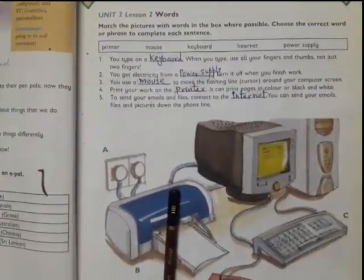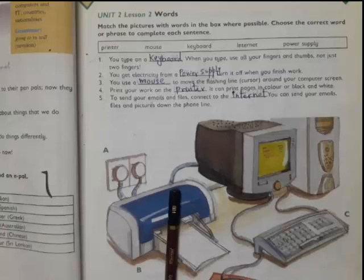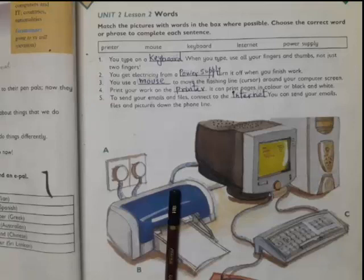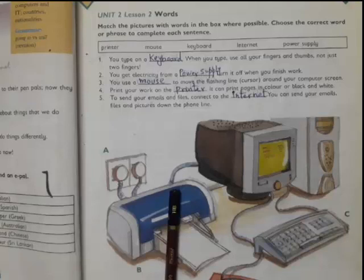Here some pictures are given and you have to match the words in the column with these pictures, and you have to fill up the blanks with these words. I have done it for you, it is very easy. You type on a keyboard. When you type, use all your fingers and thumbs, not just two fingers. Second one: you get electricity from a power supply. Turn it off when you finish work.